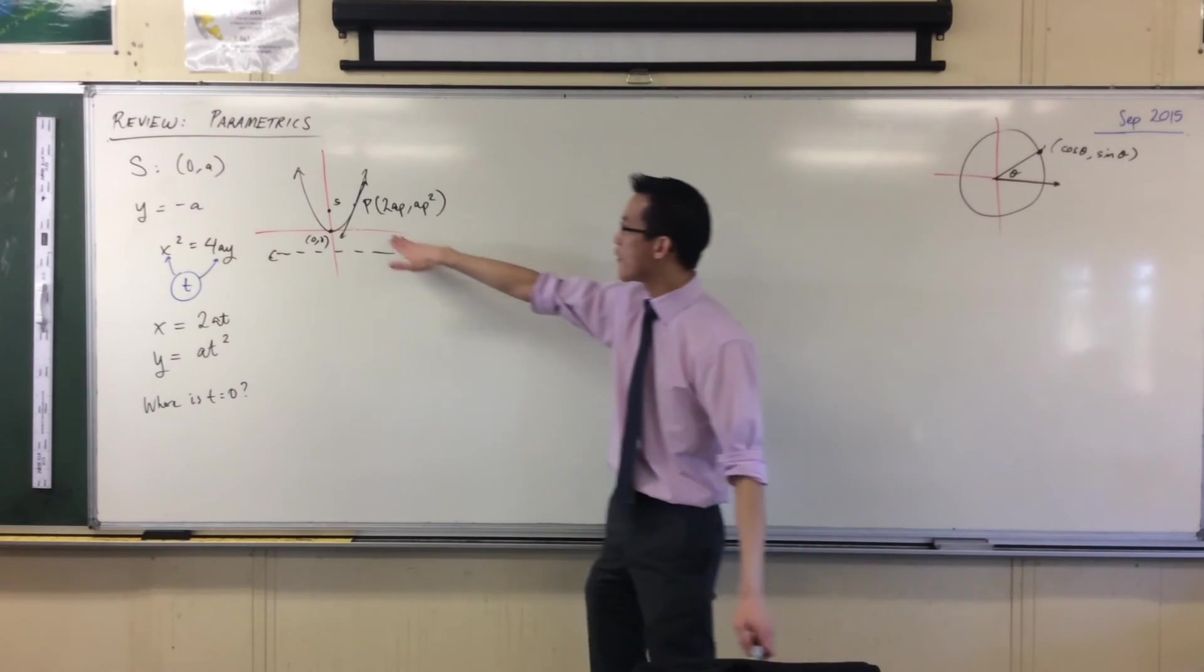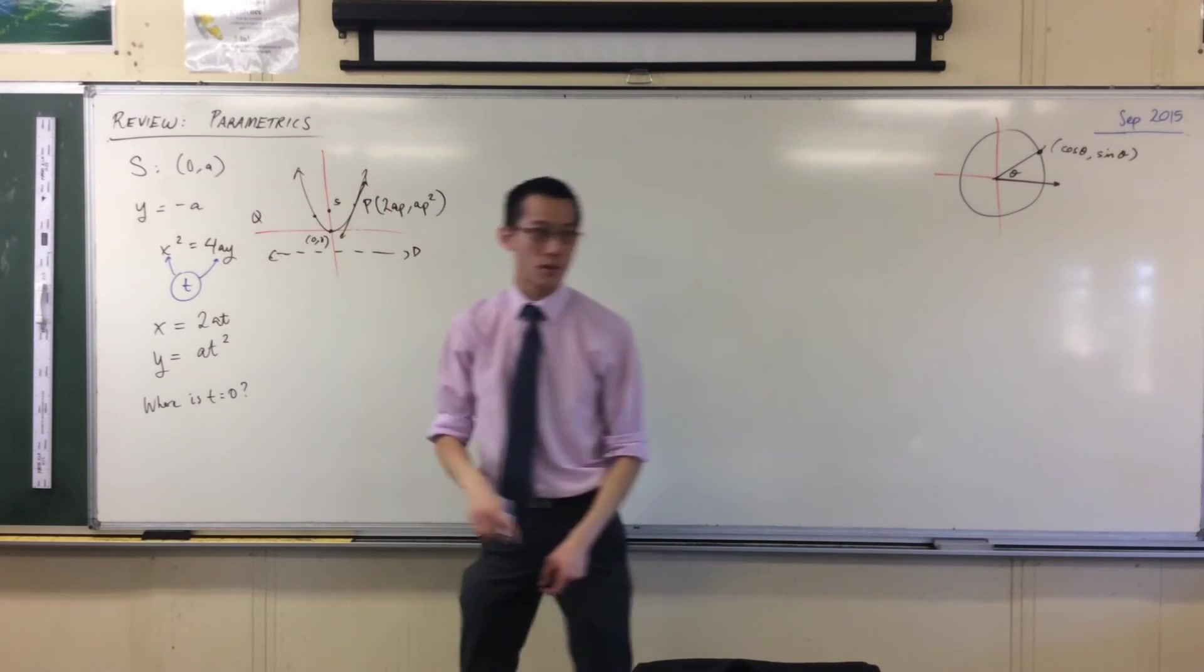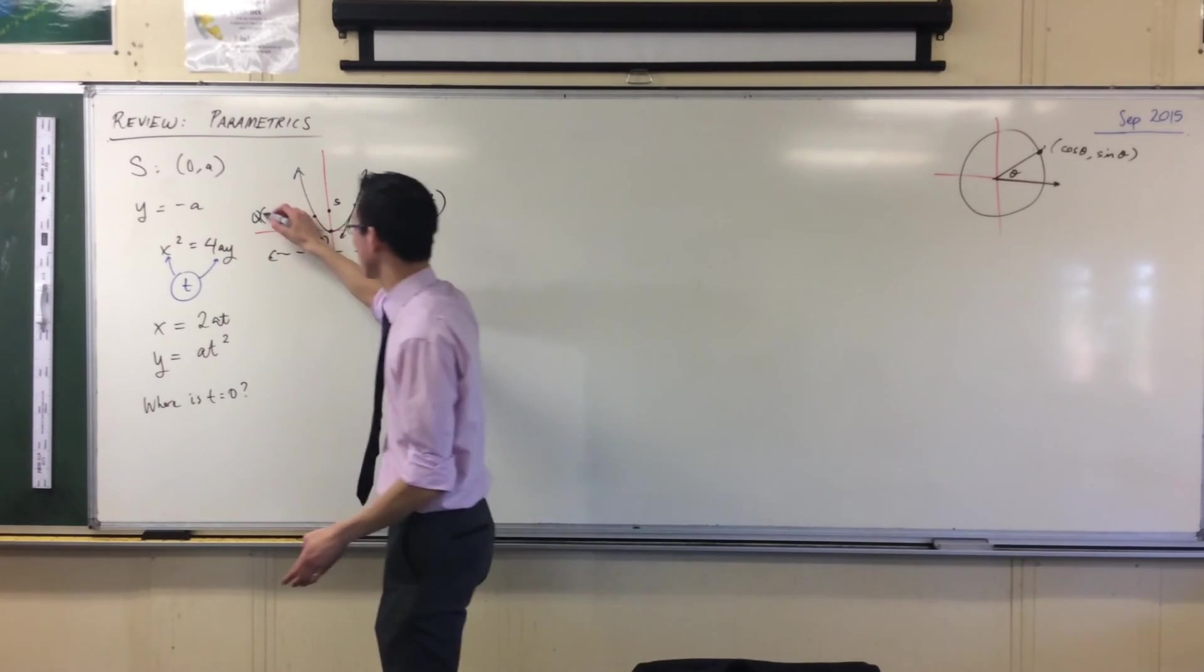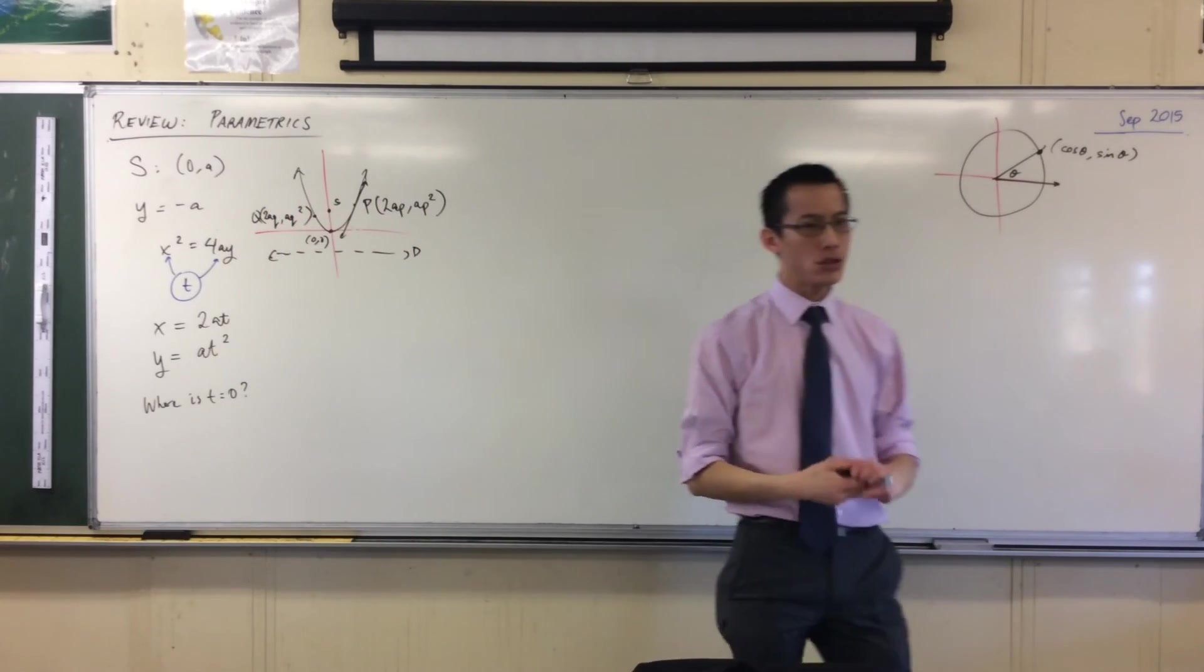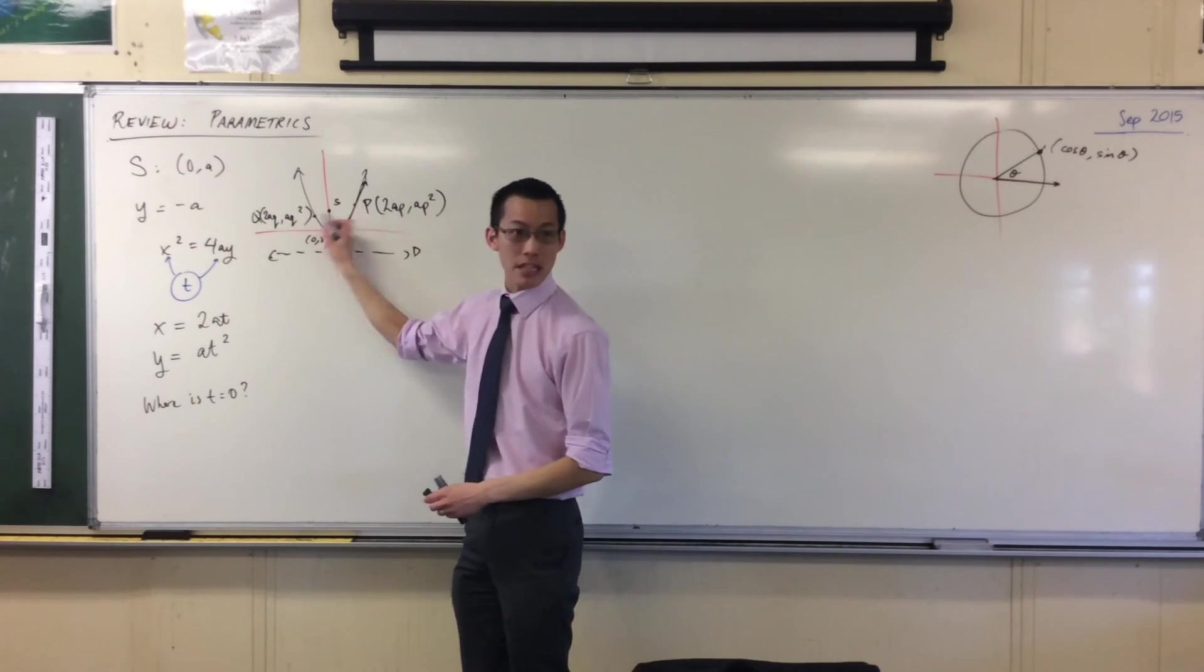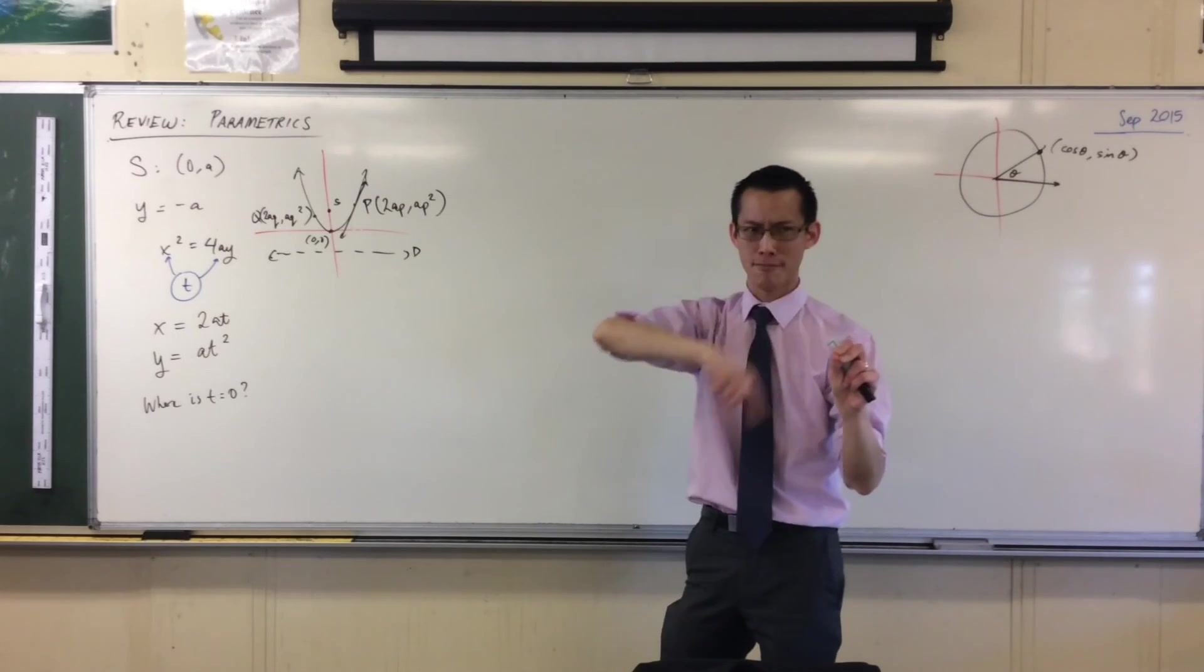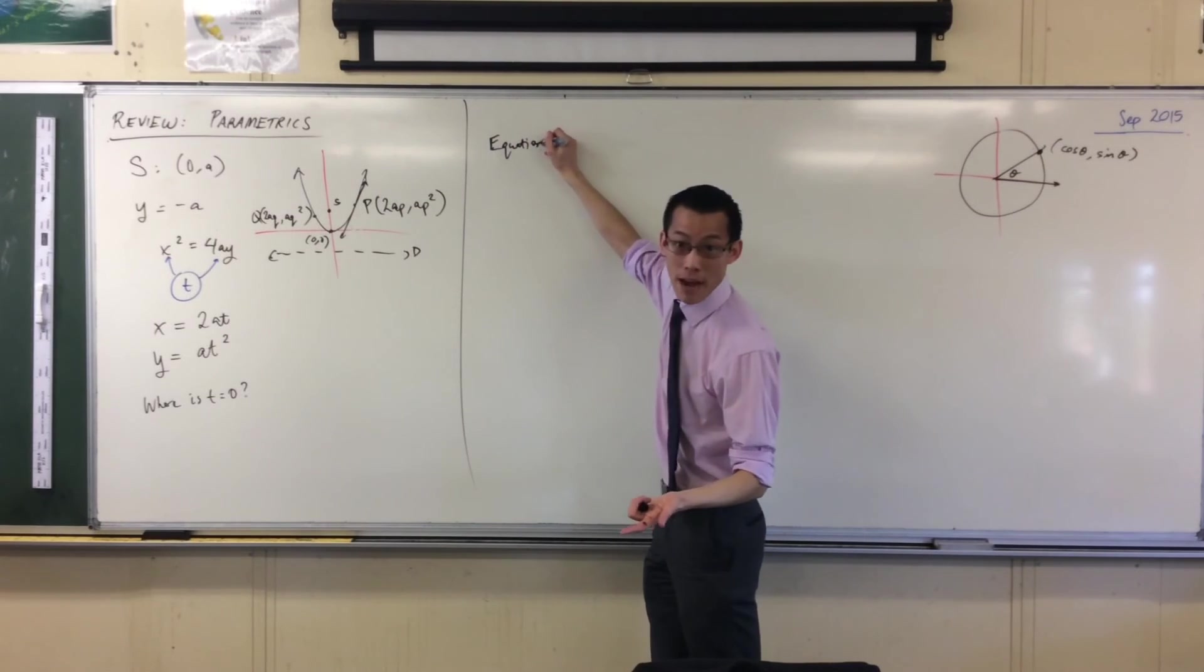We then extended that idea. We said if I've got a point over here and a point over here, I'll call that Q. For the sake of convenience, I'm going to label its coordinates as rather than 2ap, ap squared, 2aq. I can use those two points and I can find out, for example, the equation of the line, the interval that joins them. And because it's the interval that joins two points on a curved thing, we call it a chord. Very good.